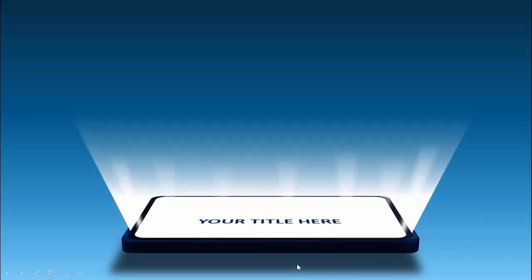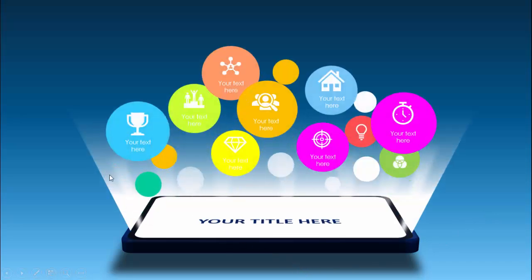In today's tutorial I'm going to show you how to create an animated mobile display with circular options infographic slide in PowerPoint. I have made this mobile display completely in PowerPoint with a gradient background using light and dark blue color combination. When you click, the shadow comes, then the title, then the light beam comes out, and then all the different options animate.